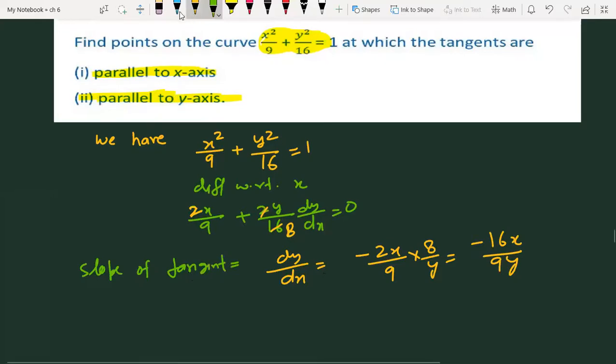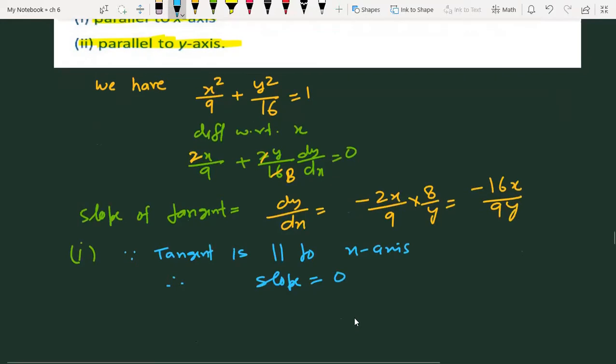Now for the first part, tangent is parallel to x-axis. This means slope is 0. So -16x/9y = 0, which gives x = 0.